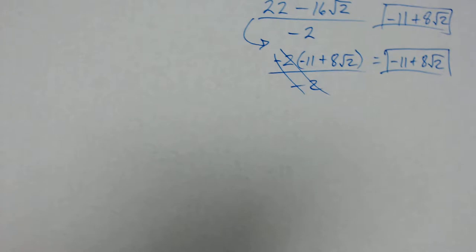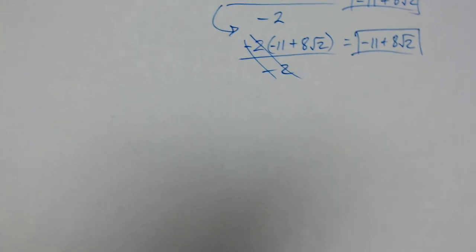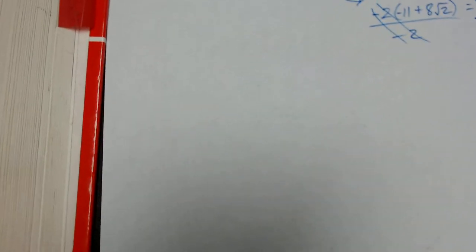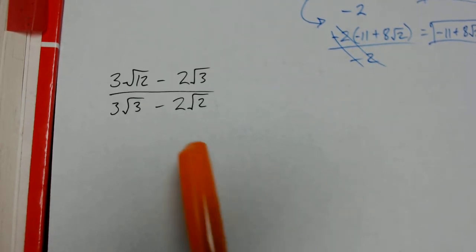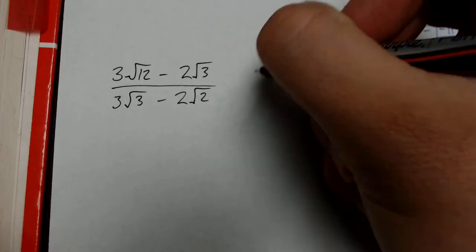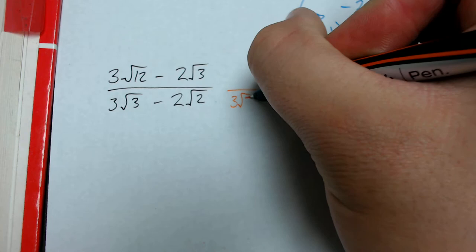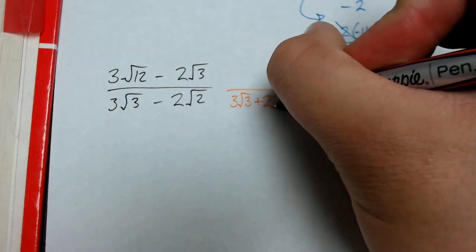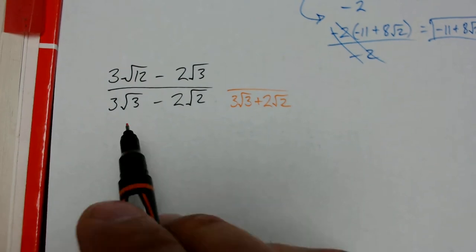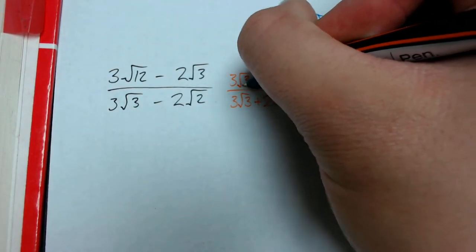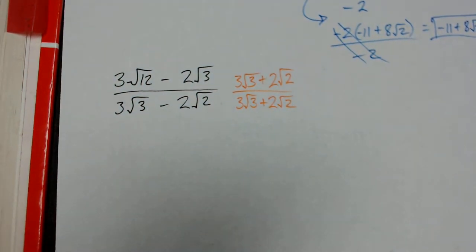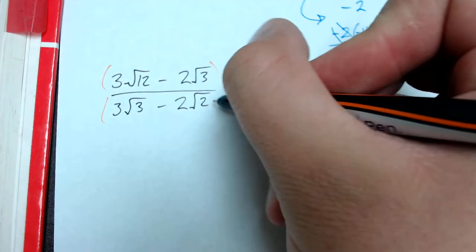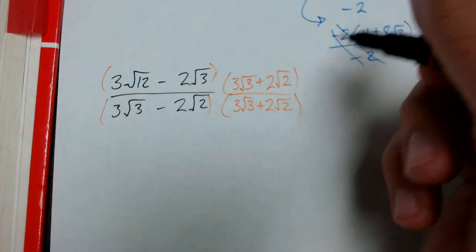If you think you've got it, go ahead and start your homework. If you need to see one more example, I'll do a harder problem — I'm going to go ahead and magically insert that right here. Step 1: identify the conjugate of the denominator. In this case it's going to be 3 root 3 plus 2 root 2. We're multiplying the numerator and denominator by that, so we're multiplying by a value of 1 and not actually changing the number.